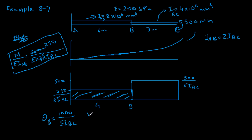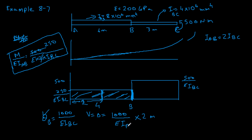For the deflection at B, denoted as delta, we take the rotation — which is the area — and multiply by the centroid of that area. For this rectangle of width 4 meters, the centroid is at 2 meters. So deflection at B is 1000 over EIBC times 2 meters, which gives 2000 over EIBC.